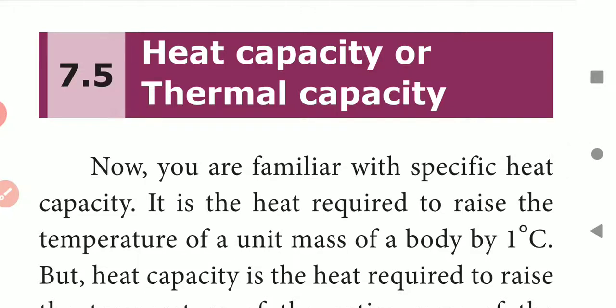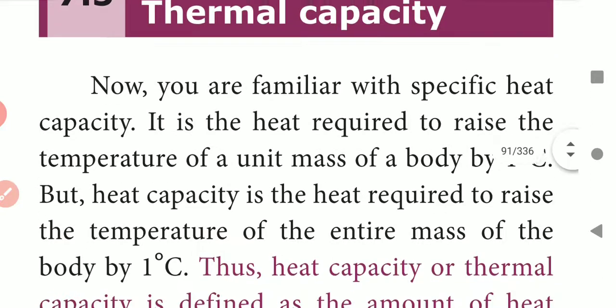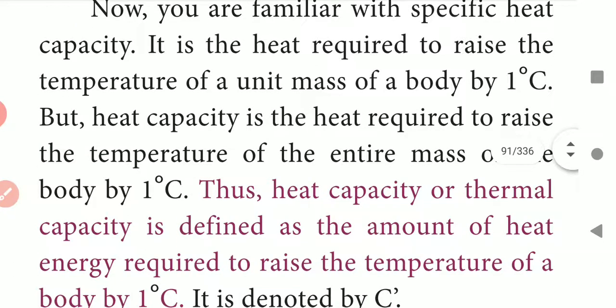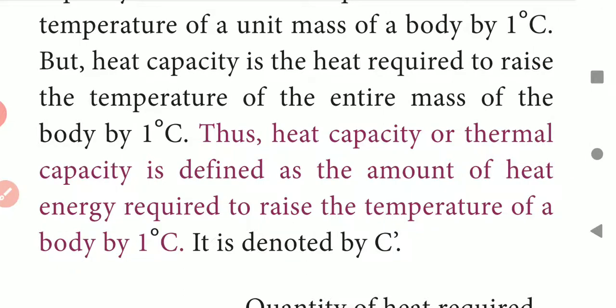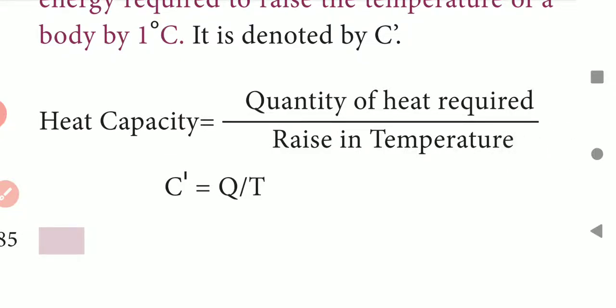Next is heat capacity, or thermal capacity. Specific heat capacity is the heat required to raise the temperature of a unit mass of a body by 1 degree Celsius. Heat capacity, on the other hand, is the heat required to raise the temperature of the entire mass of the body by 1 degree Celsius. It is defined as the amount of heat energy required to raise the temperature of a body by 1 degree Celsius, and is denoted by C'.